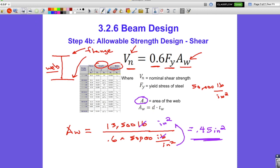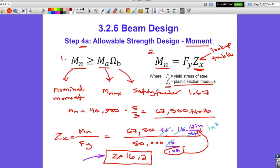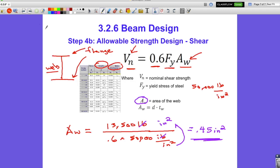Now we have our number that we can check for shear. Here we have the number, the plastic section modulus number, that we're going to check to select our initial beam. And then we still have to calculate the allowable deflection and the maximum deflection, and we'll do that in a later step.